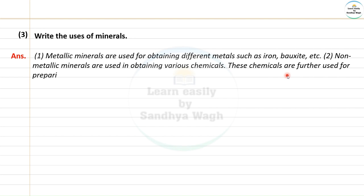These chemicals are further used for preparing different medicines. Metallic minerals include iron, bauxite, etc. These minerals are also used for selling, buying, constructing houses, and trading, while non-metallic minerals yield useful chemicals.